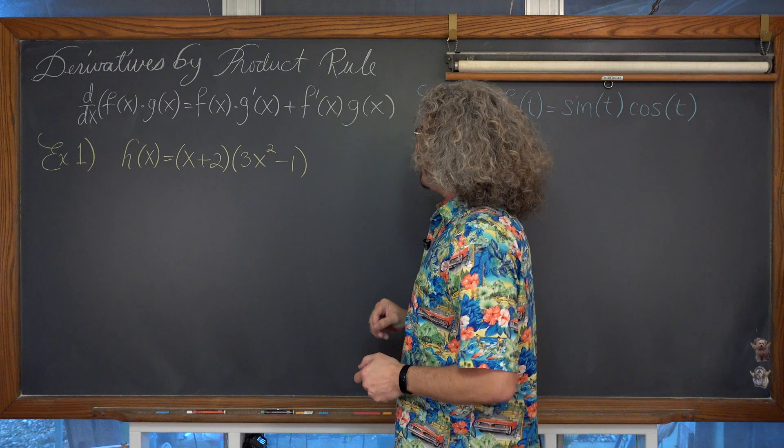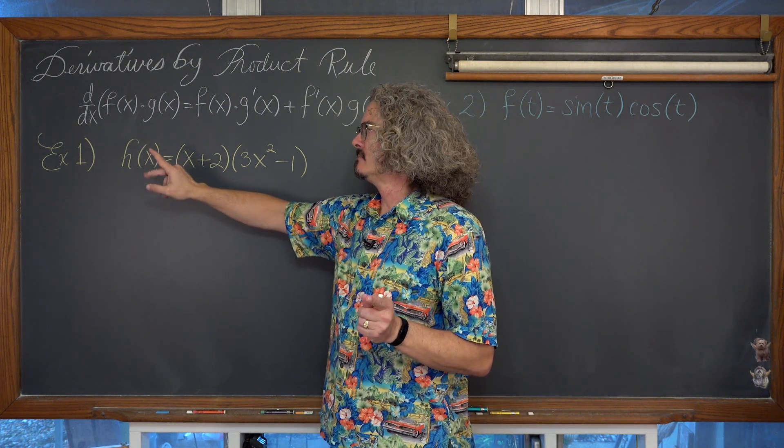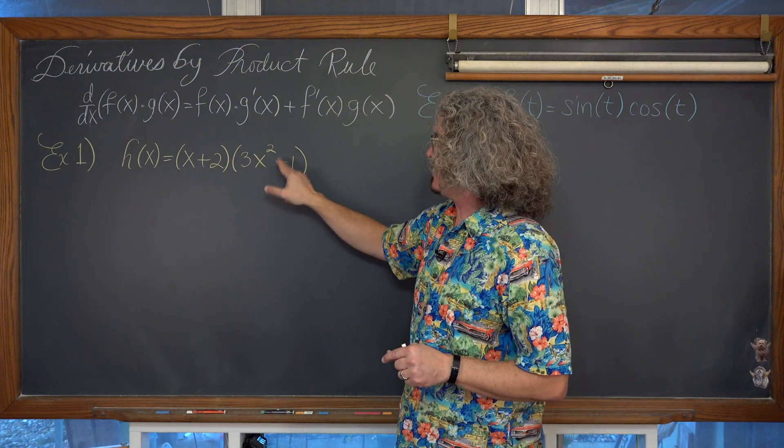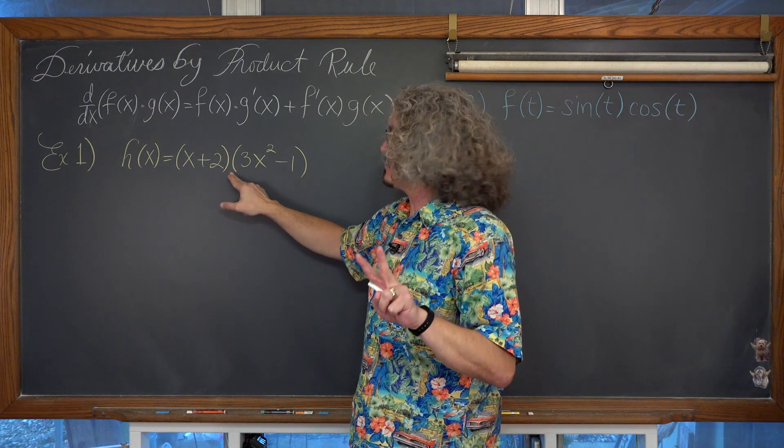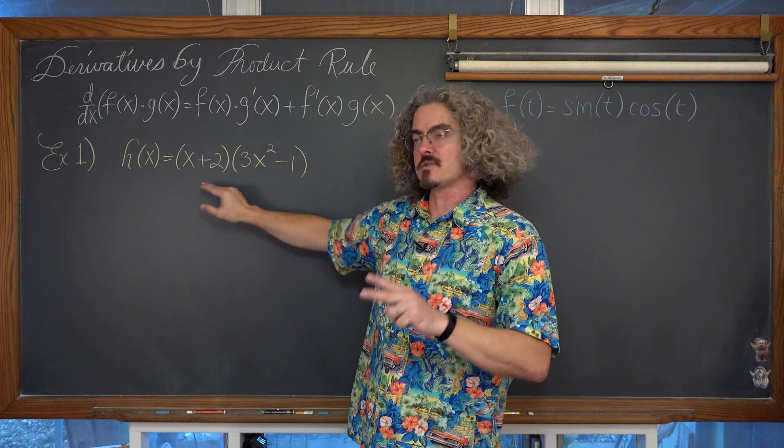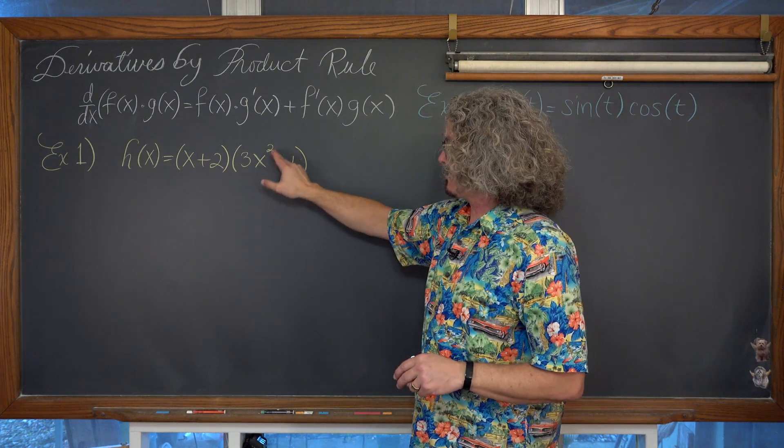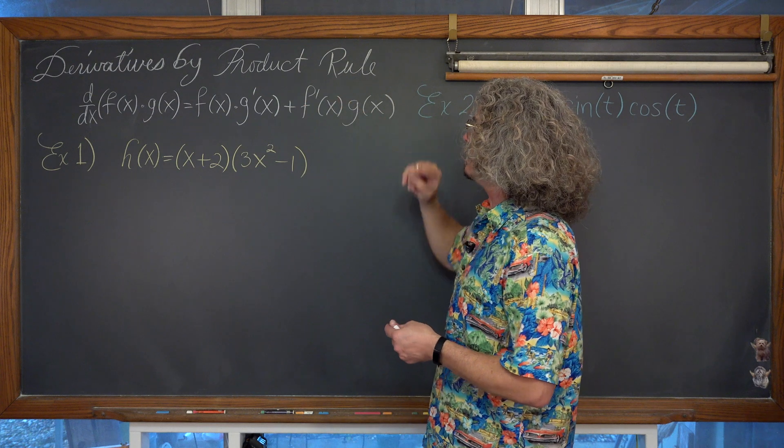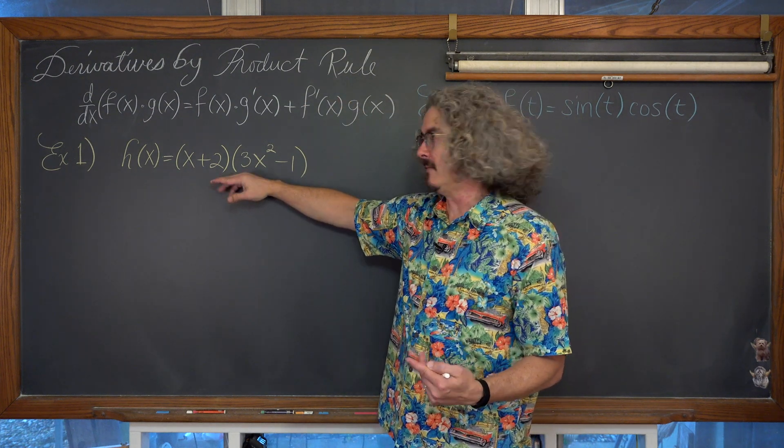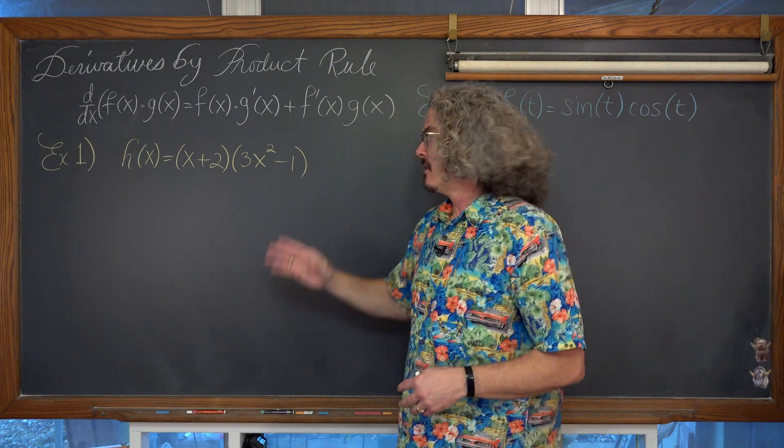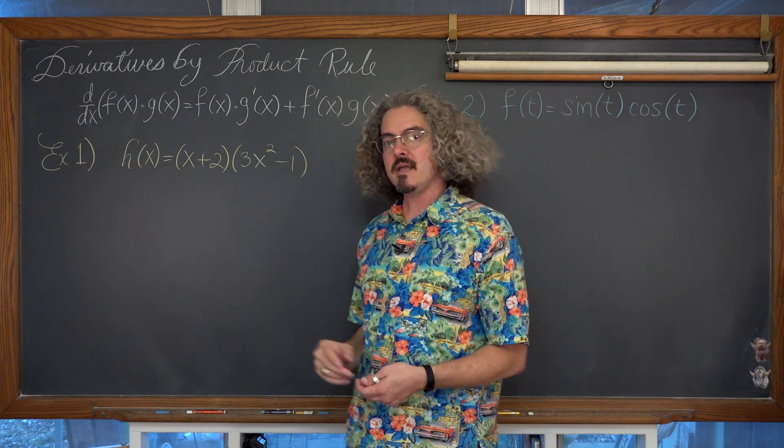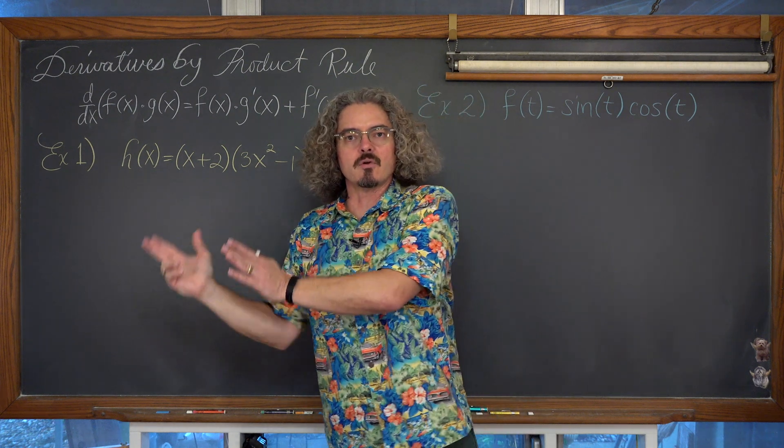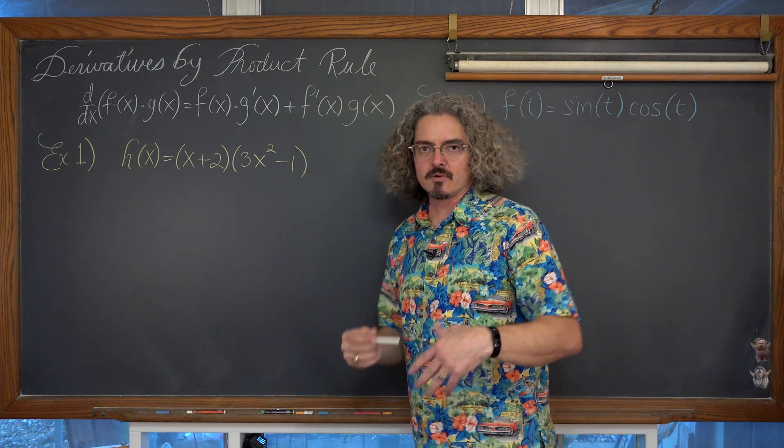Our first example here where we have h(x) = (x+2)(3x²-1). Well, this is a multiplication of two functions. We have f(x) = x+2 and g(x) is 3x²-1. And I'm pointing to this first example before going over the product rule for taking derivatives because we have done problems like this already. We can multiply these two binomials together, write this as an expanded polynomial, and take its derivative simply using the power rule. Just because we're seeing new concepts doesn't mean we can't still go back and use our old skills.